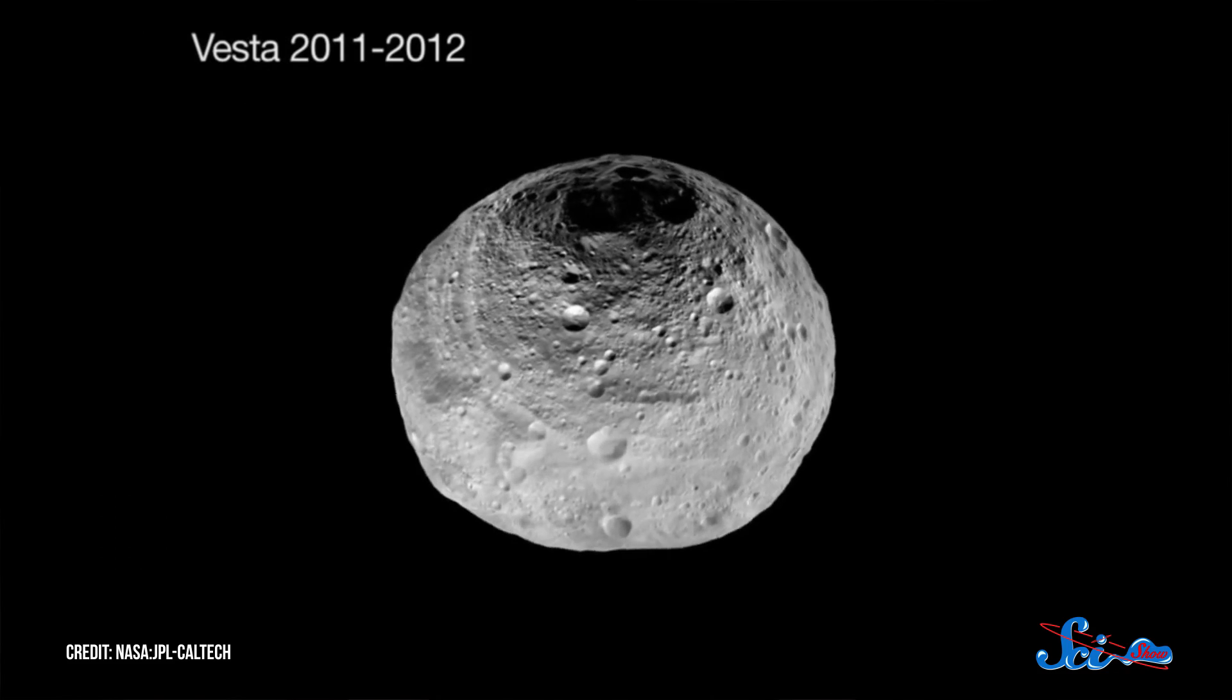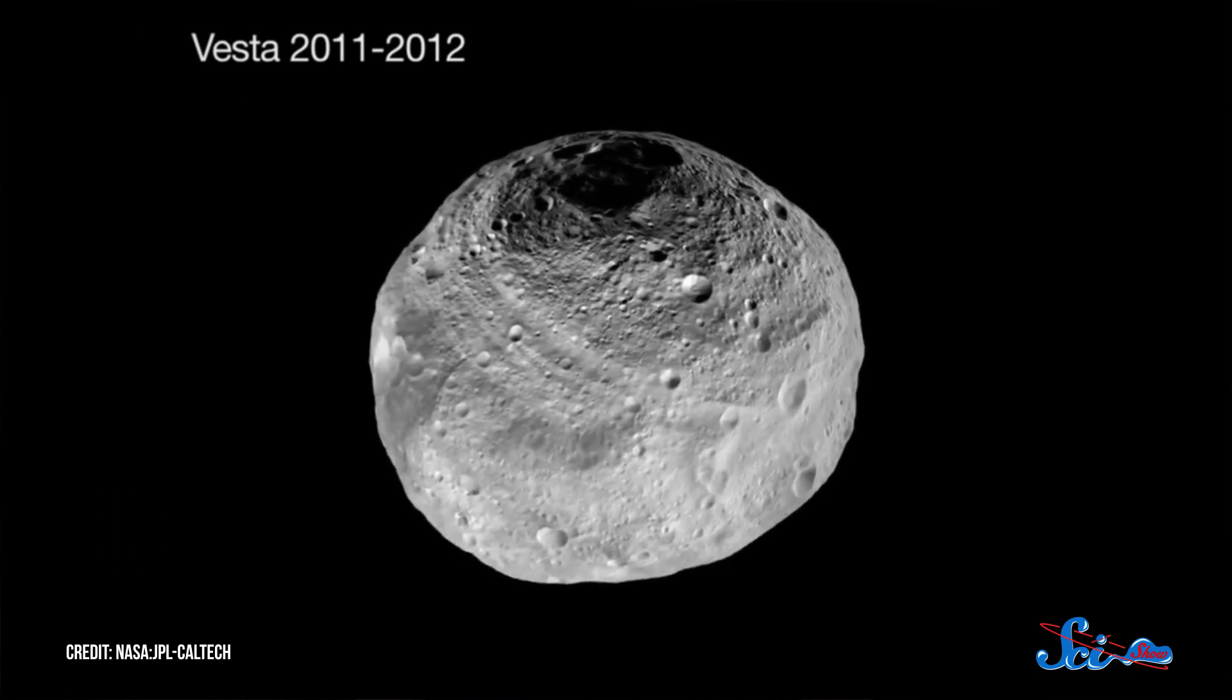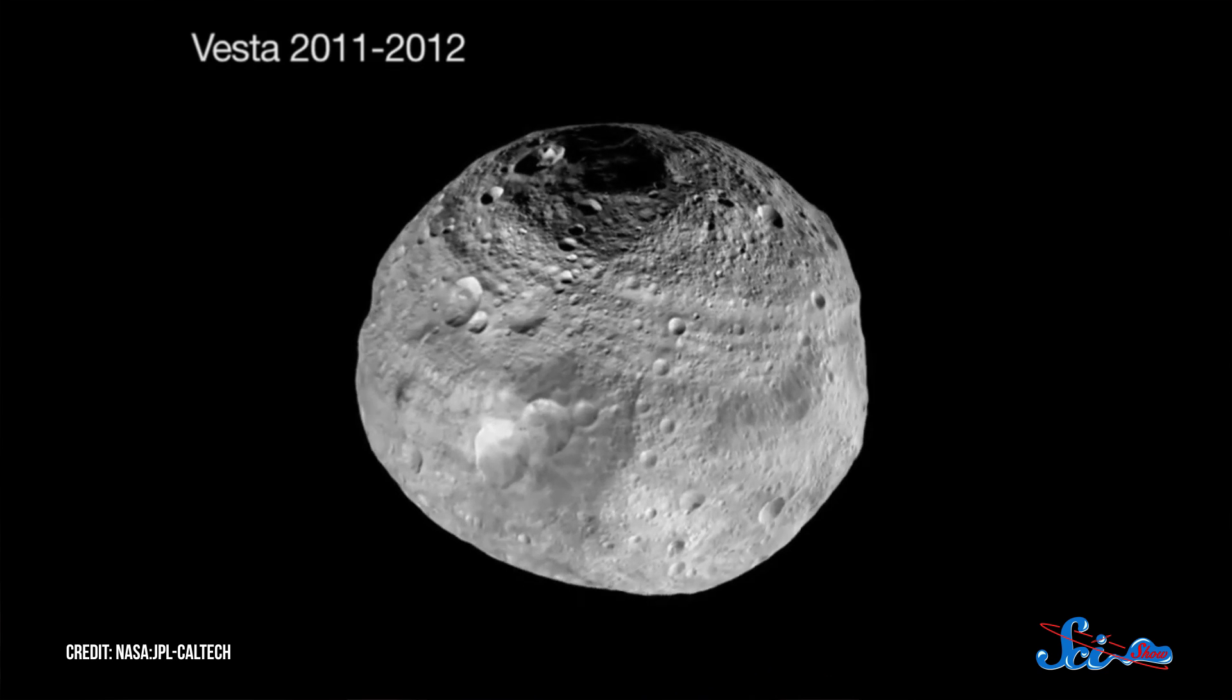But these failed planetary chunks are more than just really big, really old rocks. Vesta, for example, an asteroid that Dawn visited in 2011, turned out to have a crust, a mantle, and an iron core. Kind of like Earth.